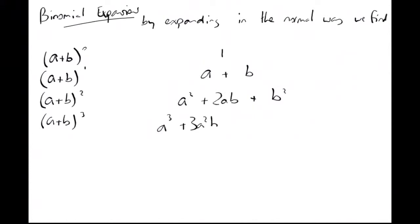(a+b) cubed, if you expand it out long, you'd get a³ + 3a²b + 3ab² + b³. (a+b) to the 4, same again: a⁴ + 4a³b + 6a²b² + 4ab³ + b⁴.